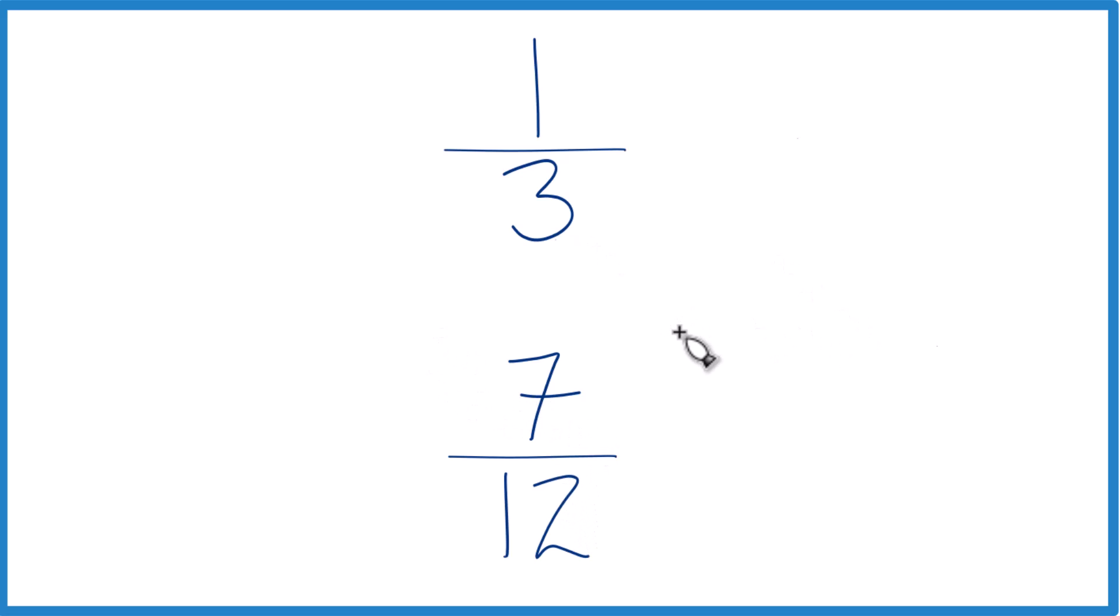What we're going to do is find a common denominator. So right now we have three and twelve, but if these are the same, then we just compare the numerators and we're done.